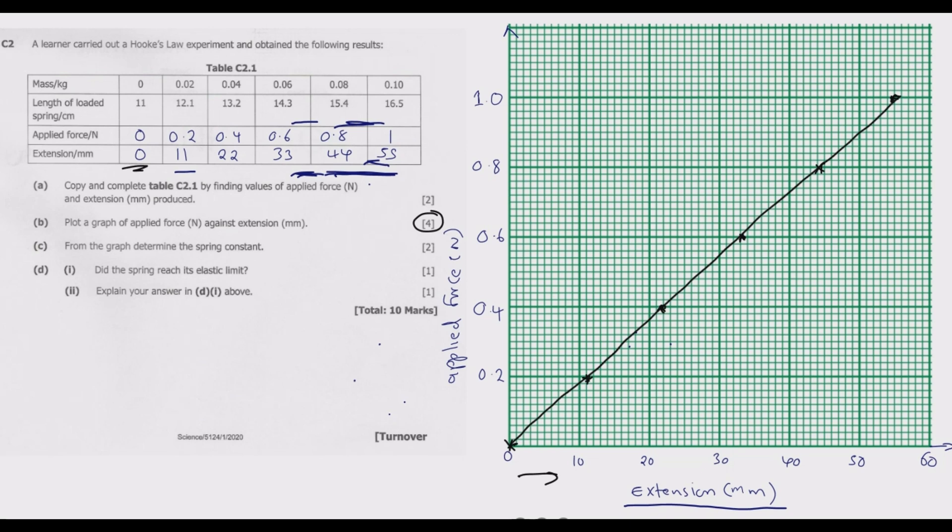Part C: From the graph determine the spring constant. K is equal to extension divided by applied force. For the entire graph it will be the change, so 55 minus 0 which is the change in extension, divided by 1 minus 0 which is the change in applied force. This gives us 55 over 1 which equals 55 millimeter per newton. For every 1 newton we extend the spring by 55 millimeter.